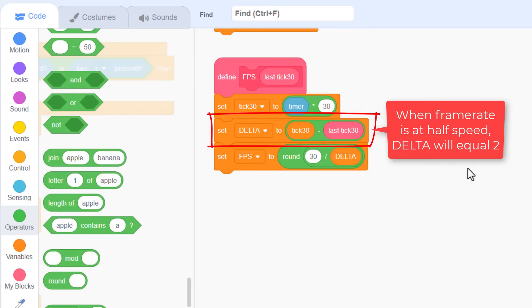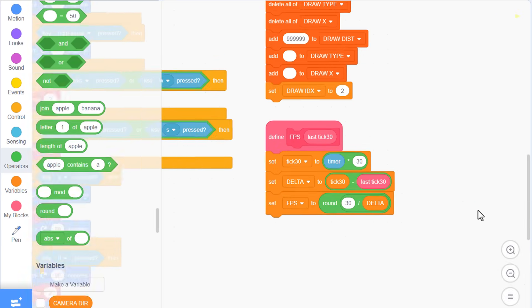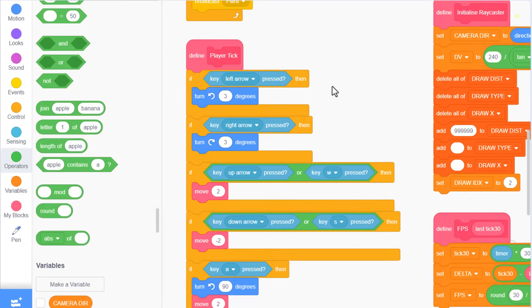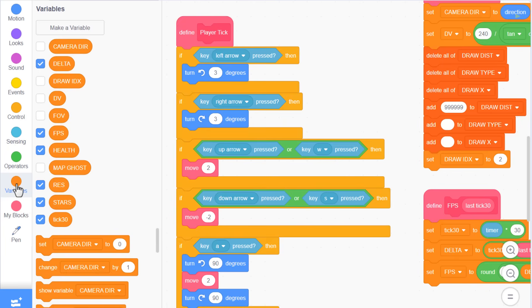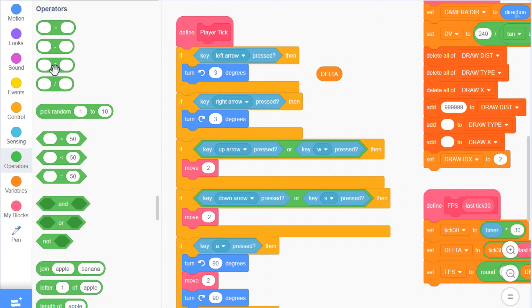So, armed with this value, find with me the define player tick script. Here are all our player movement values, mostly turns and move blocks. We are just going to multiply all these values then by delta.